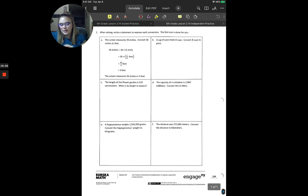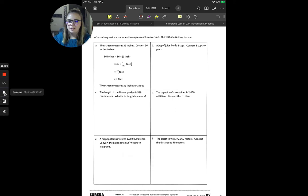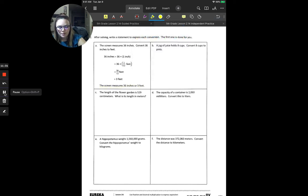So, for your independent practice, you're doing some similar kind of stuff. So, let's take a look at all of these. Sorry about that. My screen was freezing or was doing some weird stuff on my end. So, let's take a look at your independent practice for today. So, it's pretty much the same as what we were doing before. The only difference is it's asking you to write out like a sentence at the end. So, I'm going to highlight that for you. So, for example, for A, it says the screen measures 36 inches. Convert 36 inches to feet. And then at the very end, it has you write the screen measures 36 inches or three feet.